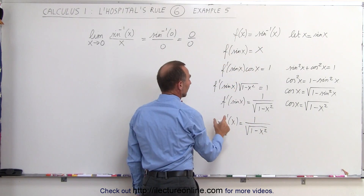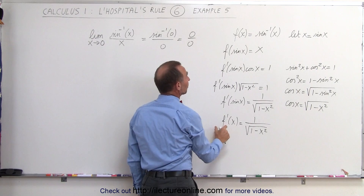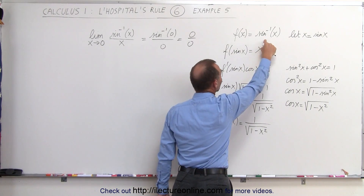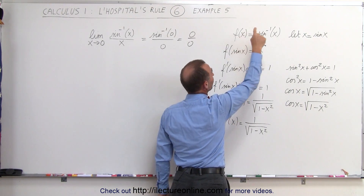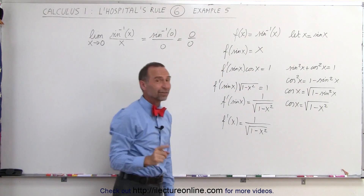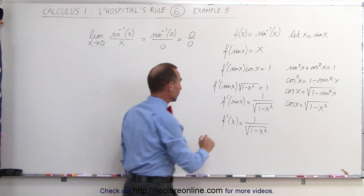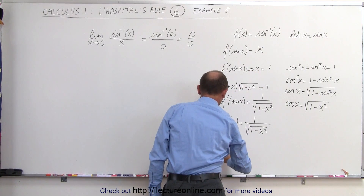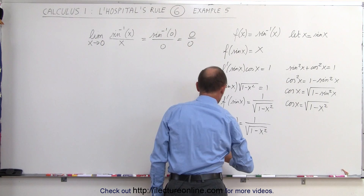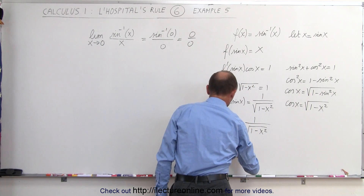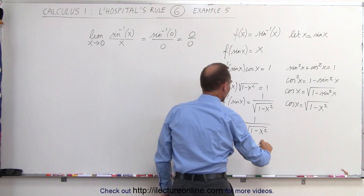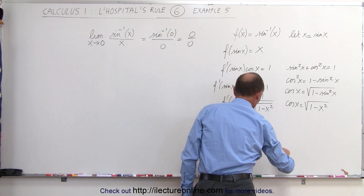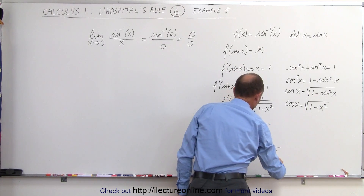Remember, we let sine of x equal x, so f prime of x must therefore equal 1 divided by the square root of 1 minus x squared. And since f of x was equal to the inverse sine of x, the derivative of the inverse sine of x — d/dx of arcsin(x) — must equal 1 divided by the square root of 1 minus x squared.